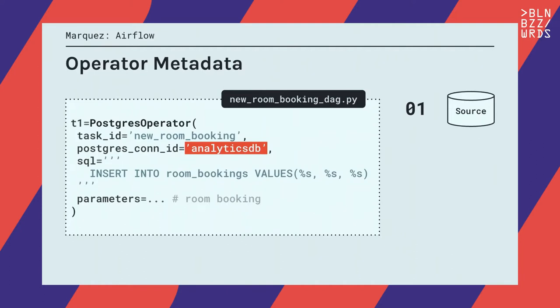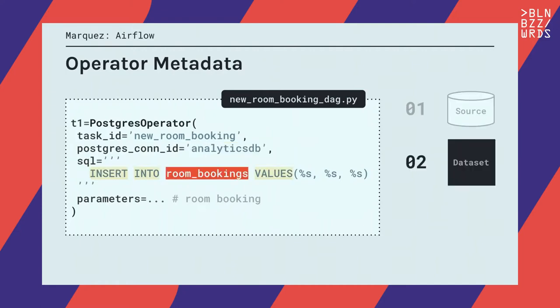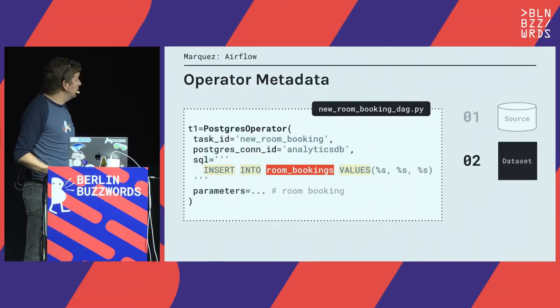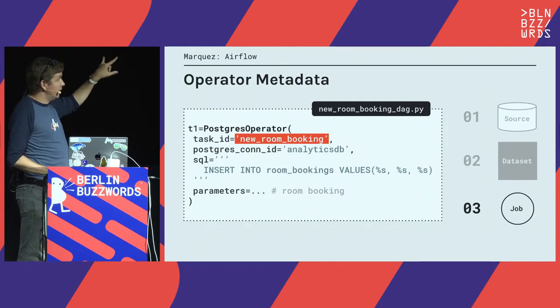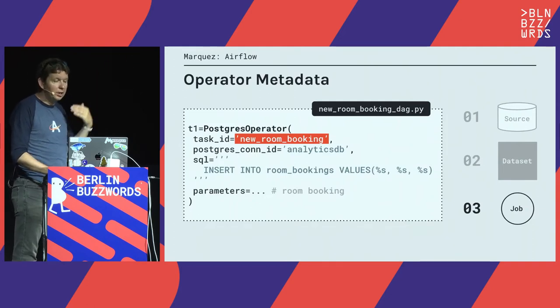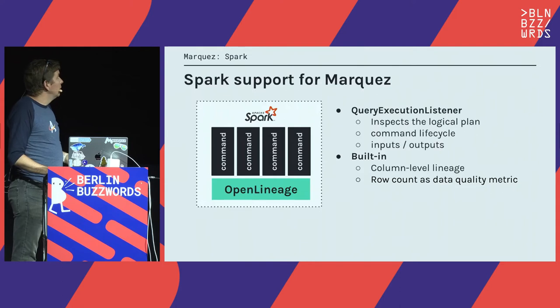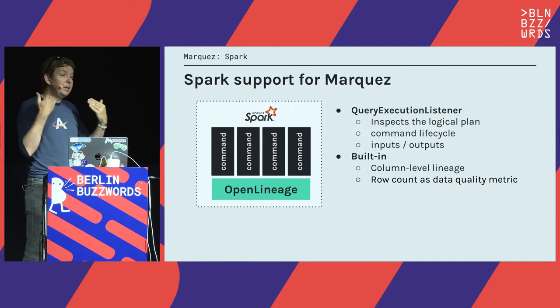The OpenLineage extraction understands each of those operators, extracts the metadata, and sends it to the OpenLineage endpoint. When you define a task in your Airflow job, we extract a few pieces of information — for example, from what source the data is coming, and in this case we parse the SQL to extract the table you're reading from, so we know what data set this is about. The task itself has a name that helps build the unique job name to identify recurring runs.